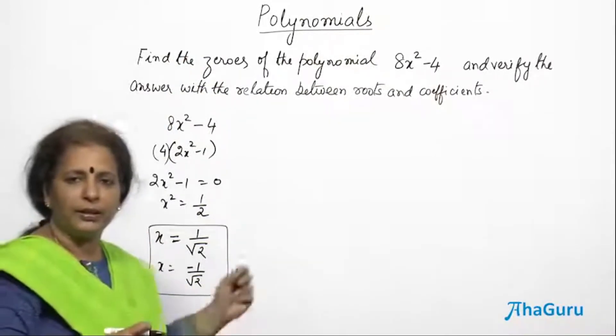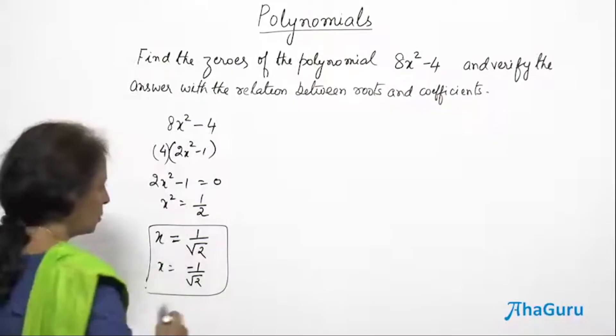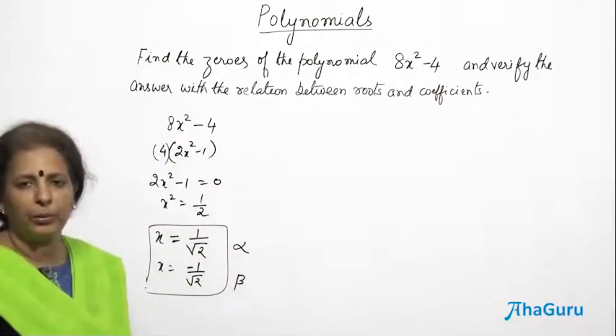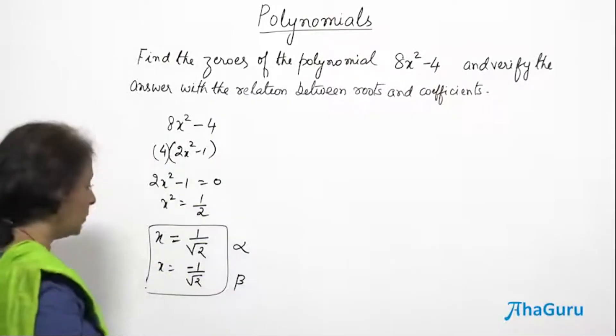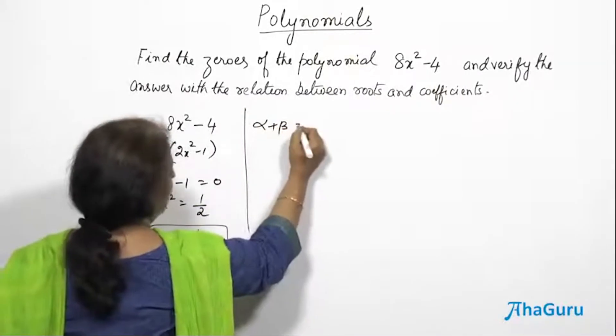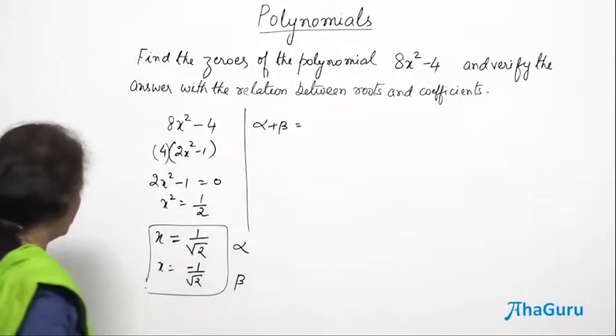But we are just going to verify whether this answer is correct or not. So this is alpha, this is beta. Because there are two roots, we have just named them alpha and beta. Let us see what is the value of alpha plus beta. Since we have really found, why not we add them?